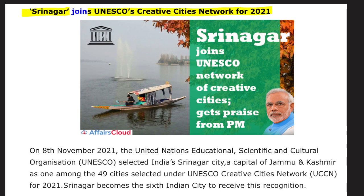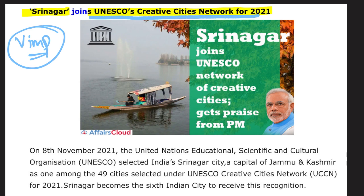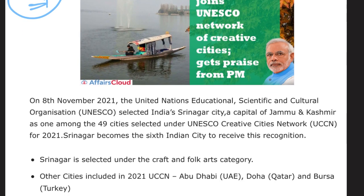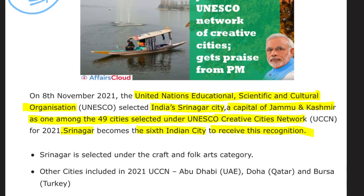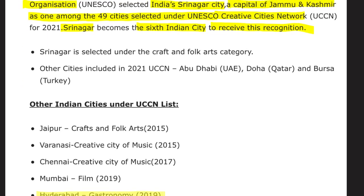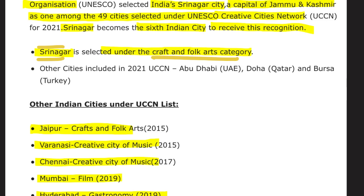Srinagar joined UNESCO's Creative Cities Network for 2021. On 8th November, UNESCO selected India's Srinagar, capital of Jammu and Kashmir, as one of 49 cities under the UNESCO Creative Cities Network 2021. Srinagar became the sixth Indian city to receive this recognition. Other Indian cities include Hyderabad for Gastronomy, Mumbai for Film, Chennai for Creative City of Music, Varanasi for Creative City of Music, and Jaipur for Crafts and Folk Art. Srinagar is selected under the Craft and Folk Art category.